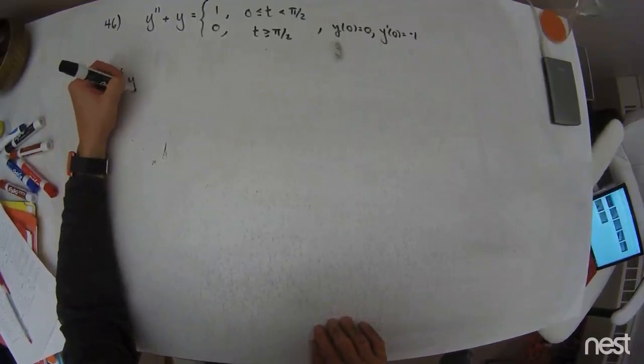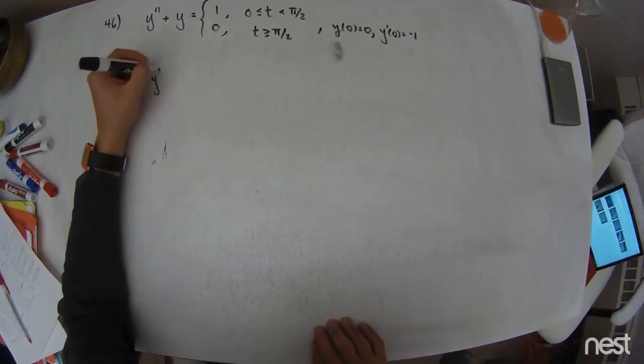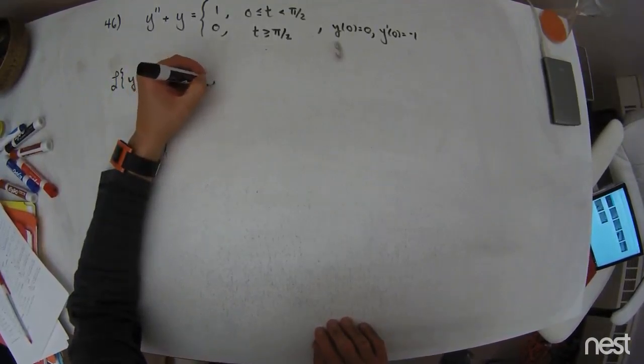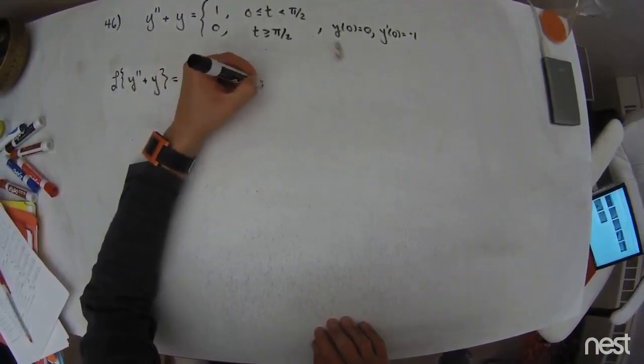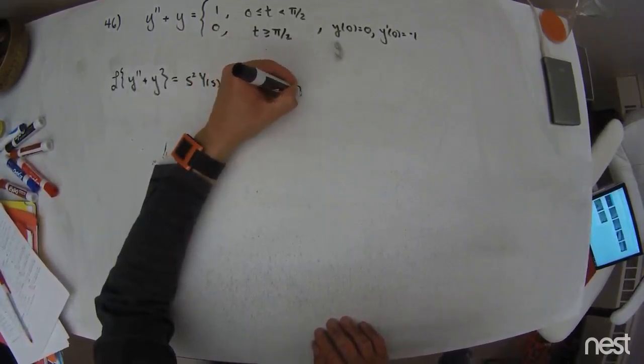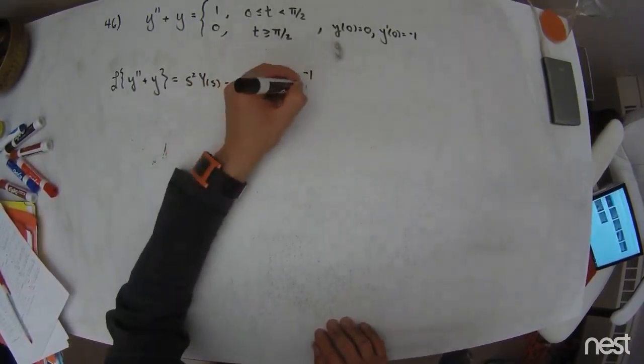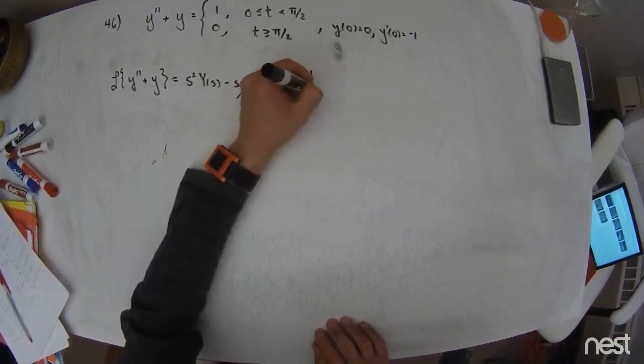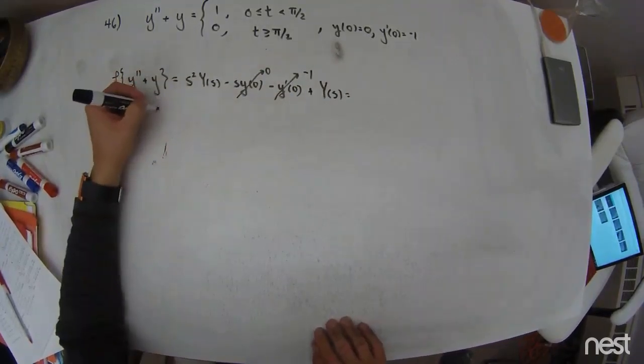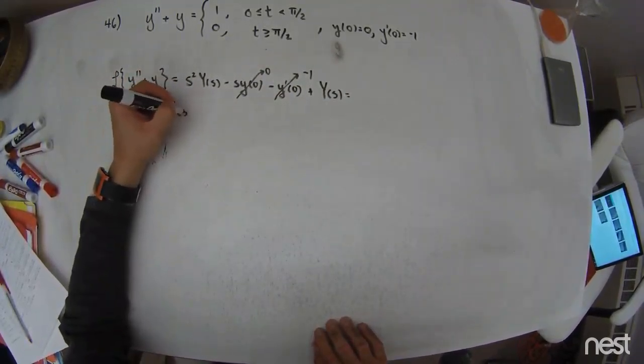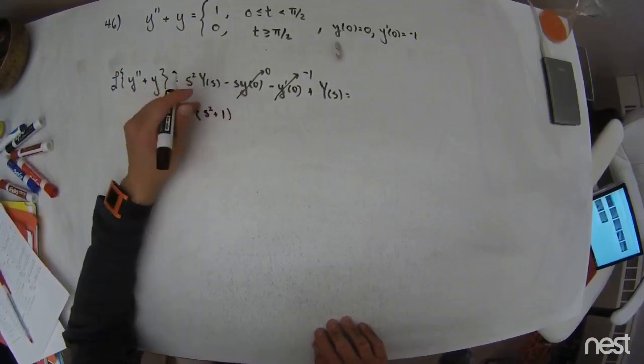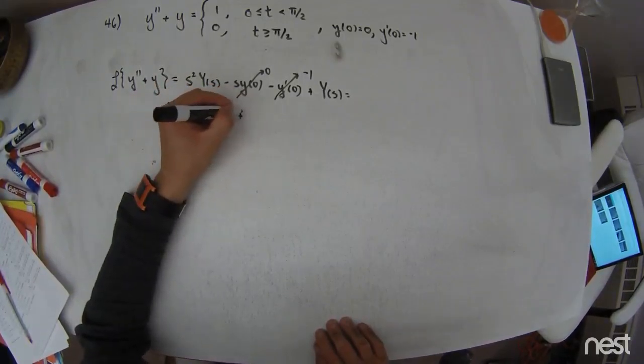I take the Laplace transform of the left-hand side. That is going to be s squared, capital Y of s, minus s times the little y of 0, which I know to be 0. That's the initial displacement, minus y prime of 0, which I know to be negative 1. Be careful of the negative there. I add to that the Laplace transform of y, which is capital Y of s. I conglomerate terms on the left-hand side. I get capital Y of s times s squared plus 1, and then I get plus 1.